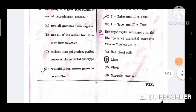Question number 60: Exoerythrocytic schizogony in the life cycle of the malarial parasite Plasmodium occurs in? The option is B, liver.